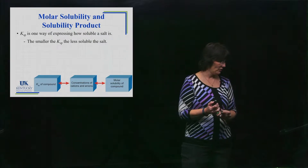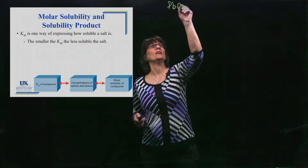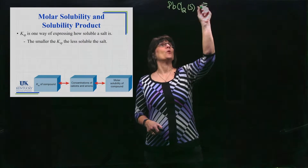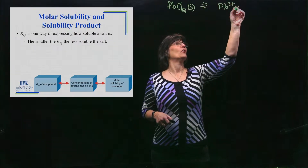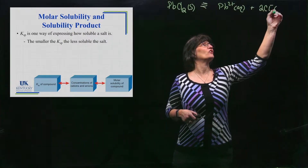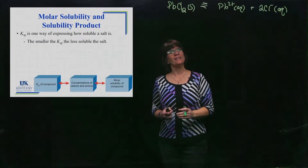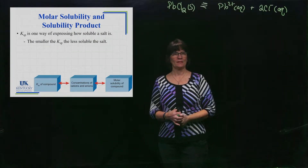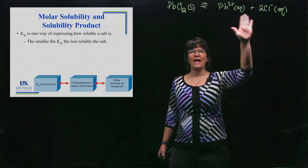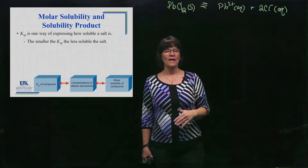Let's write a reaction for lead chloride, PbCl₂ — according to the solubility rules, that's an insoluble salt, so you have your ions on the right. A small K tells you the equilibrium lies farther to the left, and the fewer ions you're going to have in solution. So the magnitude of KSP is one way to assess solubility.